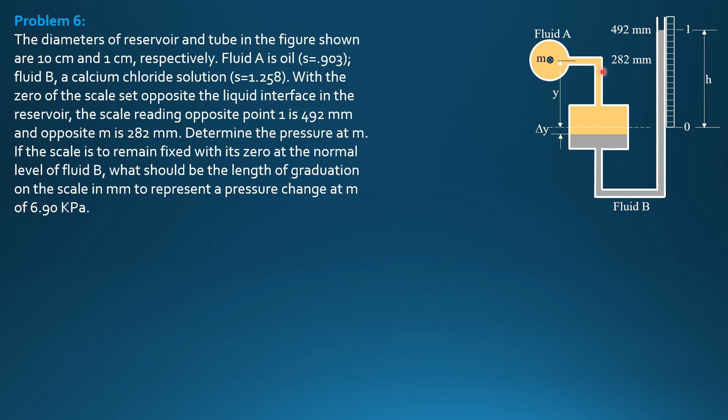Whatever increase in pressure here will push this interface to have this displacement delta Y. And the corresponding rise in fluid B from the normal level is H. So we are asked first to determine the pressure at M.